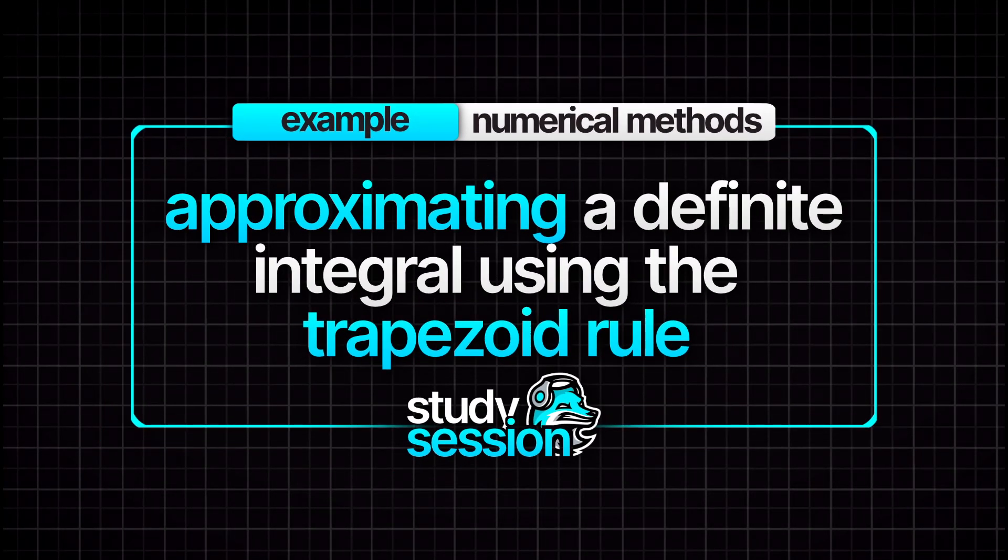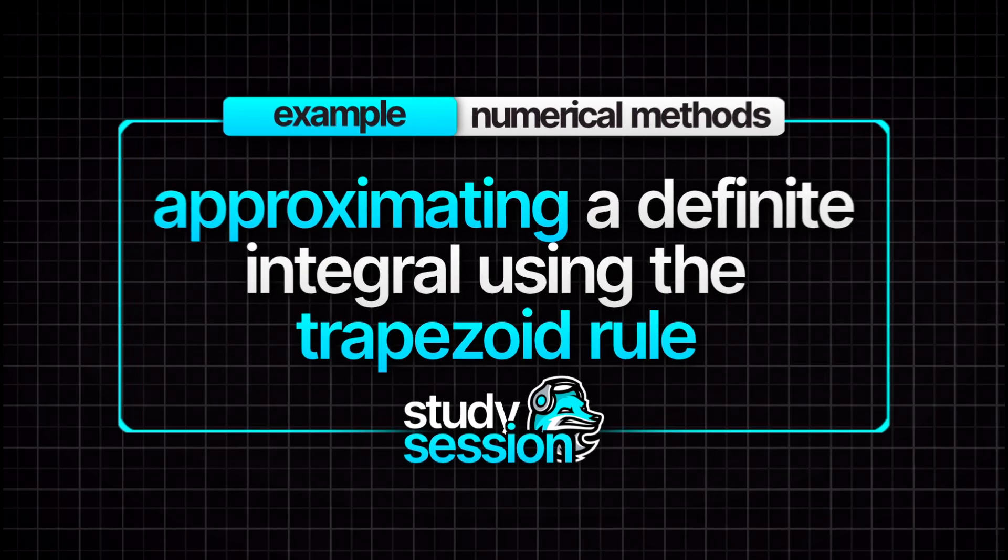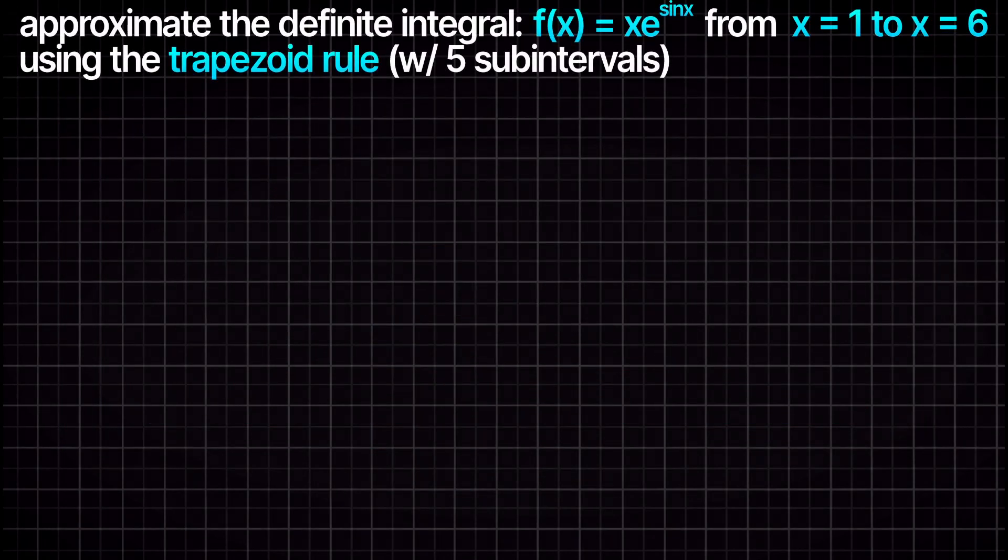Hey everyone, in this example video we are asked to approximate the following definite integral from 1 to 6 using the trapezoid rule with 5 subintervals.